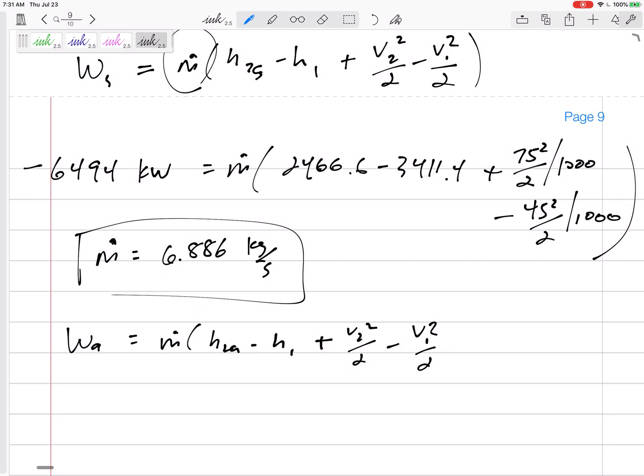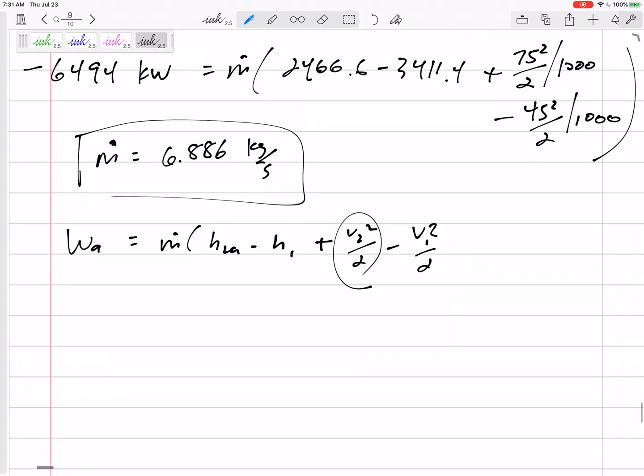Work actual equals m dot times (h2 actual minus h1 plus v2 squared minus v1 squared over 2). Sometimes there's a velocity actual and velocity isentropic, sometimes there's a mass flow rate actual and isentropic. For this one, with no other information, we have to assume that these are the same whether it's isentropic or actual.